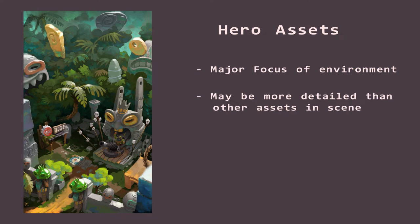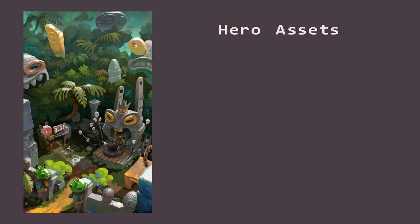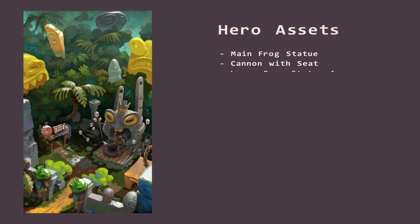In this particular concept by Mahmood Ben Amur, whose portfolio I've linked in the description, our hero asset looks like it should be this frog-like statue and the cannon. This is because it's the key focus of this concept and feels like the central area that we'd be exploring if this was a level in a video game or a scene in a movie. I'm also going to add these other two giant statues to our hero asset list just because they don't repeat in the scene, but also because they're really large and will likely require some more work than our other smaller assets.